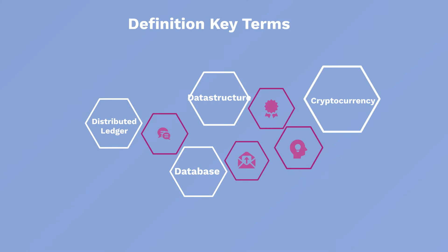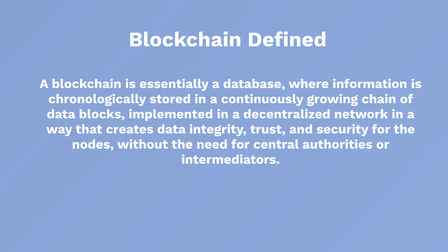Let us see other definitions of blockchain from different platforms and literature. As the slide says: a blockchain is essentially a database where information is chronologically stored in a continuously growing chain of data blocks. Information is stored in the form of a chain which is continuously growing. It is implemented in a decentralized network in a way which creates data integrity, trust, and security for the nodes without any need of a central authority or intermediary.